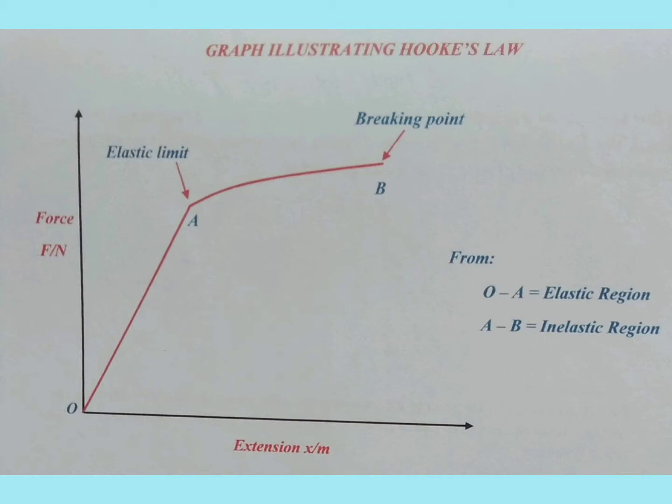But if it stretches past the elastic limit, the spring will never be the same. The elastic limit is a maximum extension that can be accommodated by a spring without it becoming permanently stretched. If the elastic limit of an object is surpassed, it will not return to its original length once the force has been removed. That is, the object will become permanently stretched.